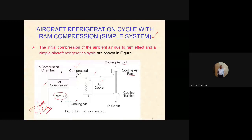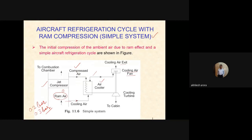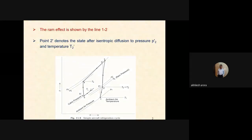Let us assign state points to the system. Rammed air is at state point 1; air leaving the jet compressor is at state point 2; air leaving the air cooler is at state point 3; after the turbine it is at state point 4; then it is sent to the cabin. The cooling turbine produces power used to run the cooling air fan which draws air through the air cooler. This is the simple aircraft refrigeration system with ram compression.